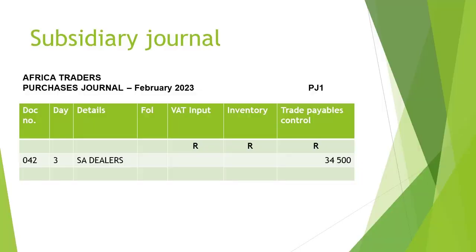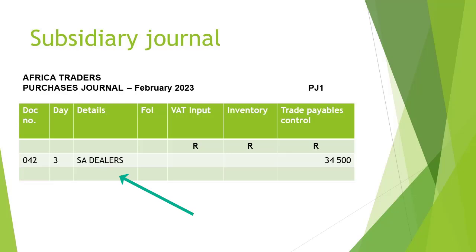When we start to record the transaction in the purchases journal of Africa Traders, we will start by writing down the document number in the document number column. In this case, it is number 042. In the day column, we will record the date of the transaction, which was the 3rd of February. Under the details column, you will write the name of the supplier from whom you bought the inventory. In this example, it is SA Dealers.